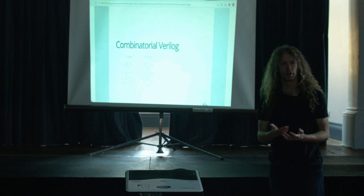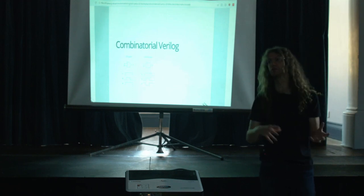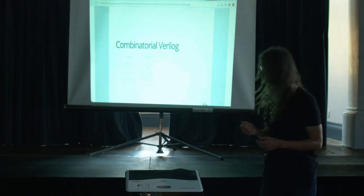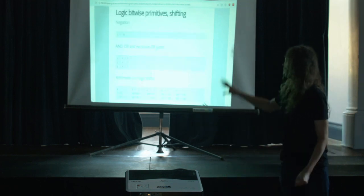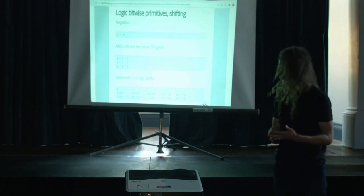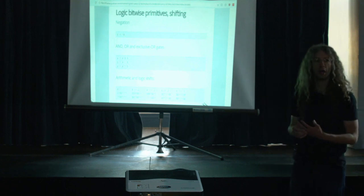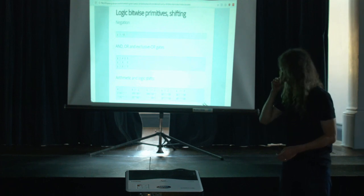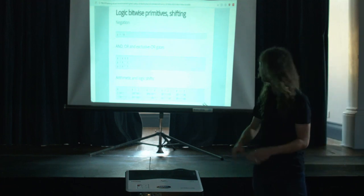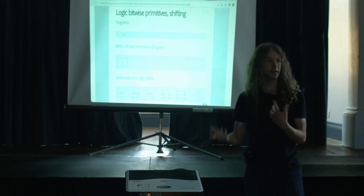Now a look at some combinatorial Verilog constructs. There's a lot of code on the next few slides, but I want to give you a feel for the kinds of things you can express easily in Verilog. There are logical bitwise primitives: negation, and, or, not, exclusive or, and that kind of thing. You can also shift values up and down in registers — there are both arithmetic and logical shifts. Unlike in C, you can choose the type of shift by using the syntax rather than it depending on the type of the operands.